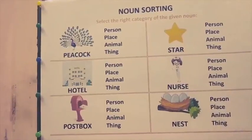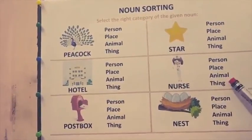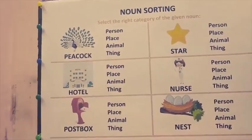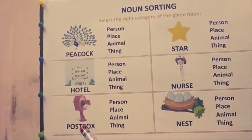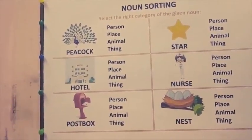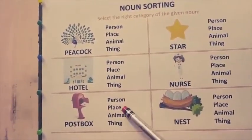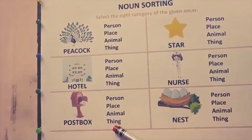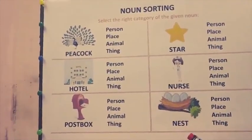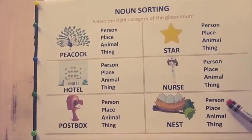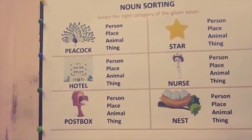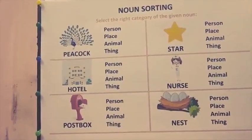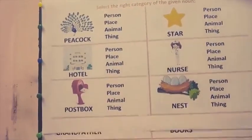Who is a nurse? Is it a person, place, animal or a thing? Yes, it's a person. Post box — where do you post the letters? Is it a person, place, animal or a thing? Yes, it's a thing. Now the next is nest. Is it a person, place, animal or a thing? It is a thing. Yes, the nest is a thing. Very right. Now let's move on.